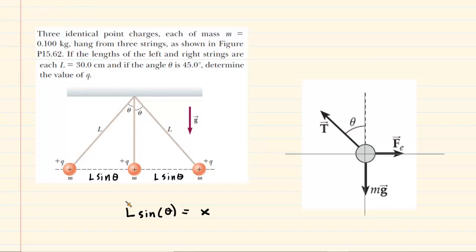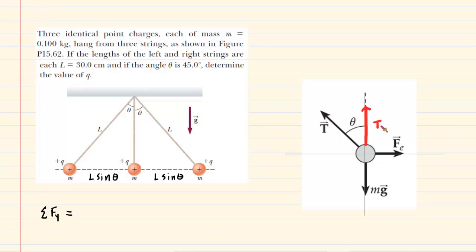Those two distances will come in handy later. Now that we have those distances and our free body diagram, the next step is to investigate the forces along the Y and X directions. Let's begin with the sum of forces along the Y direction. First, we need to break the tension force into Y and X components. We'll draw the Y component pointing upward, labeled TY, and the X component pointing leftward, labeled TX. Let's come up with an expression for TY.